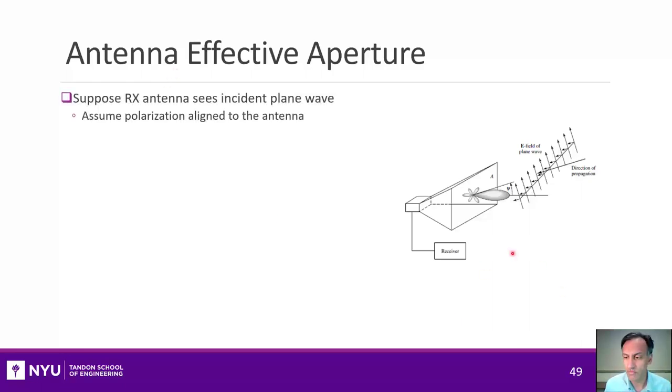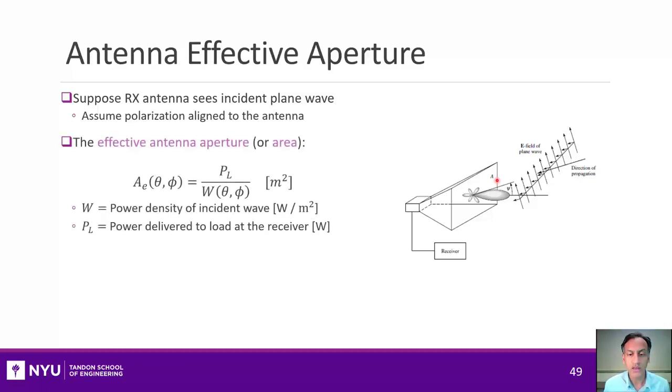For that, imagine we have some receive antenna, and there is some incident plane wave that is striking this antenna. And just for the moment, to make things simple, suppose that the polarization of that plane wave is aligned with the polarization of the antenna. We'll address the polarization loss momentarily. When you have this, we can define what's called the effective antenna aperture, which is the ratio of the power delivered to the load on that antenna by the incident power.